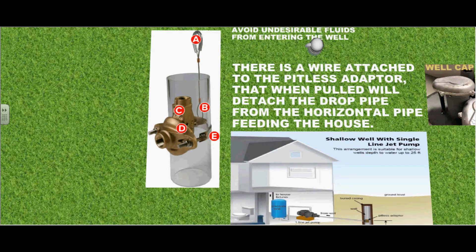Here is an illustration of the pitless adapter with a shallow well pump. There is a wire attached to the pitless adapter that when pulled will detach the drop pipe from the horizontal pipe feeding the house.